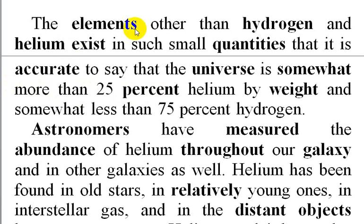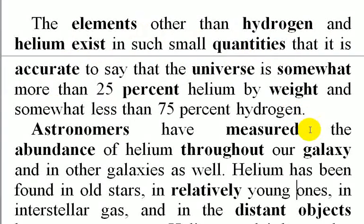The elements other than hydrogen and helium exist in such small quantities that it is accurate to say that the universe is somewhat more than 25% helium by weight and somewhat less than 75% hydrogen.